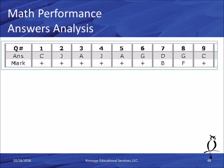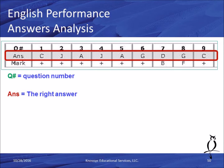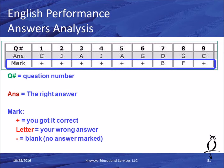The next section on the report — just like the English — is the math performance analysis. This gives you your answers and whether you got them correct. The top row with the Q number is the question number. The row labeled ANS is the right answer. The last row with Mark is a plus if correct, a letter if answered incorrectly — for example, the sample student put B when it should be D — and a dash if left blank.